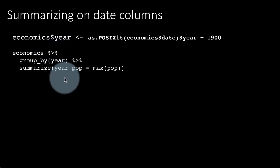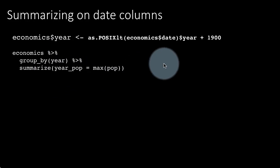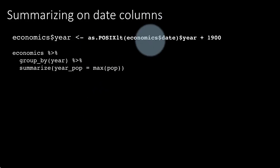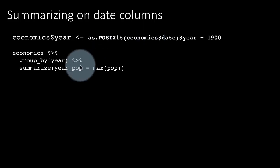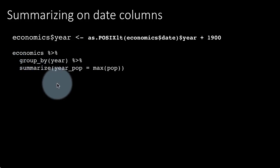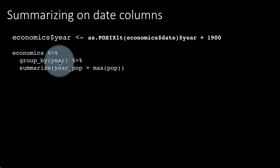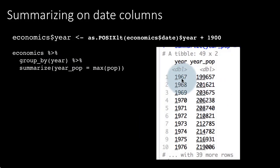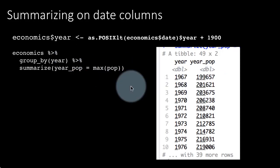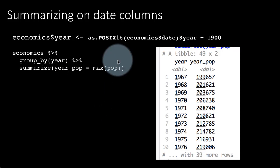Year is just a number now, and then we say summarize: year_pop is max(pop). There is a column called pop which contains the population, and the economics data frame contains monthly data. For every month we have the population, and what we want is the population for a year to be the maximum population by month for that year. For a particular year like 1920, the population is the maximum of populations from January through December. So you get for the year 1967 the population is that value, and that's summarizations on date columns the long way.